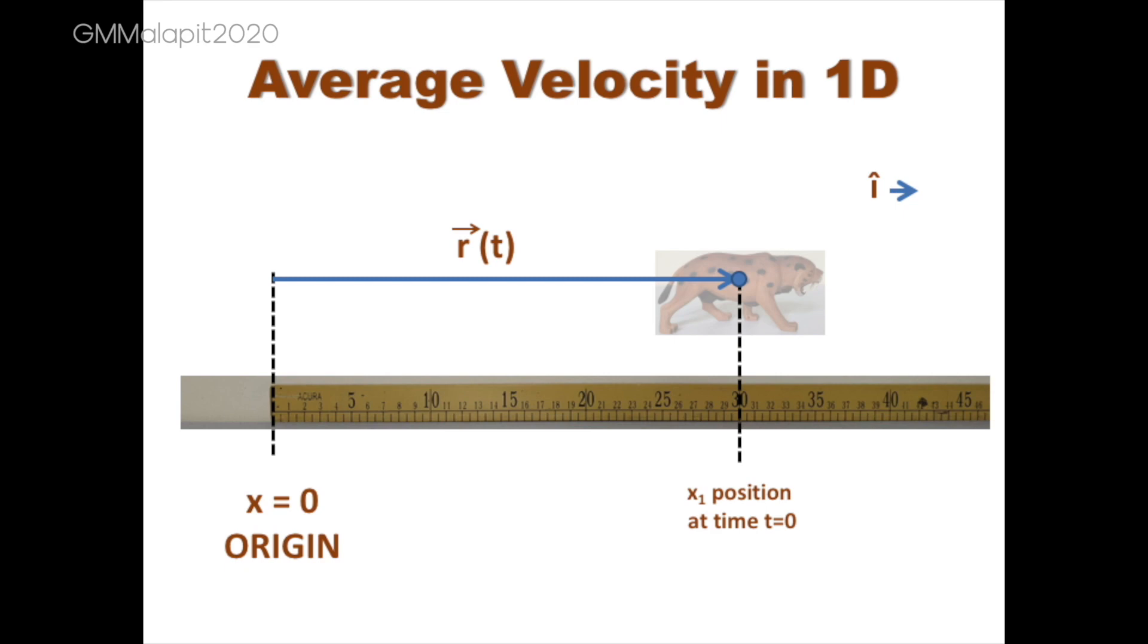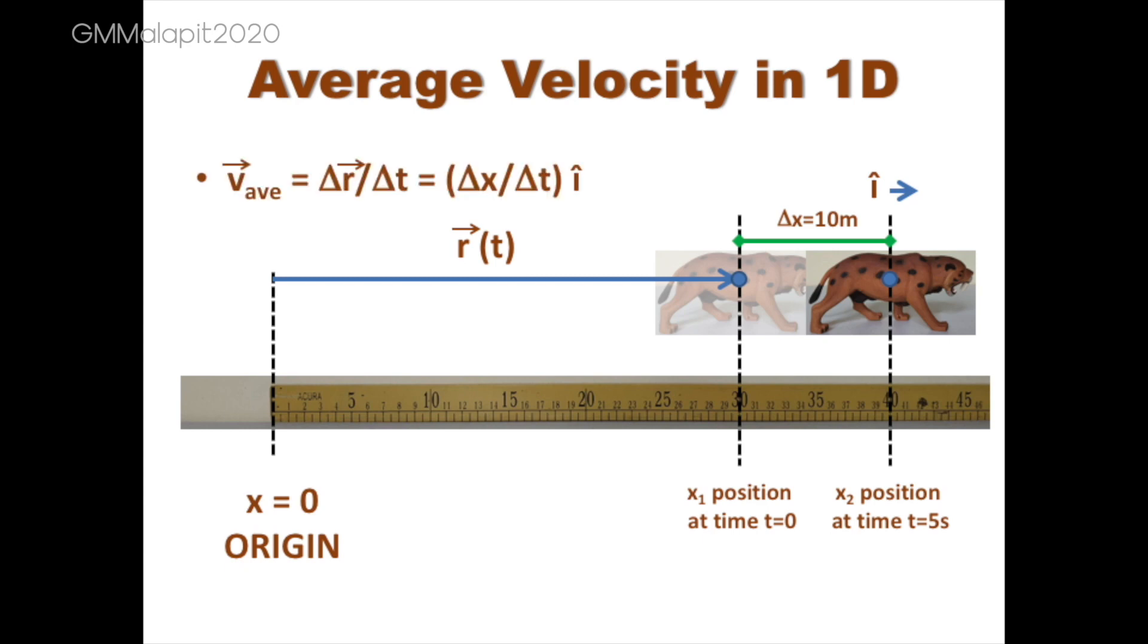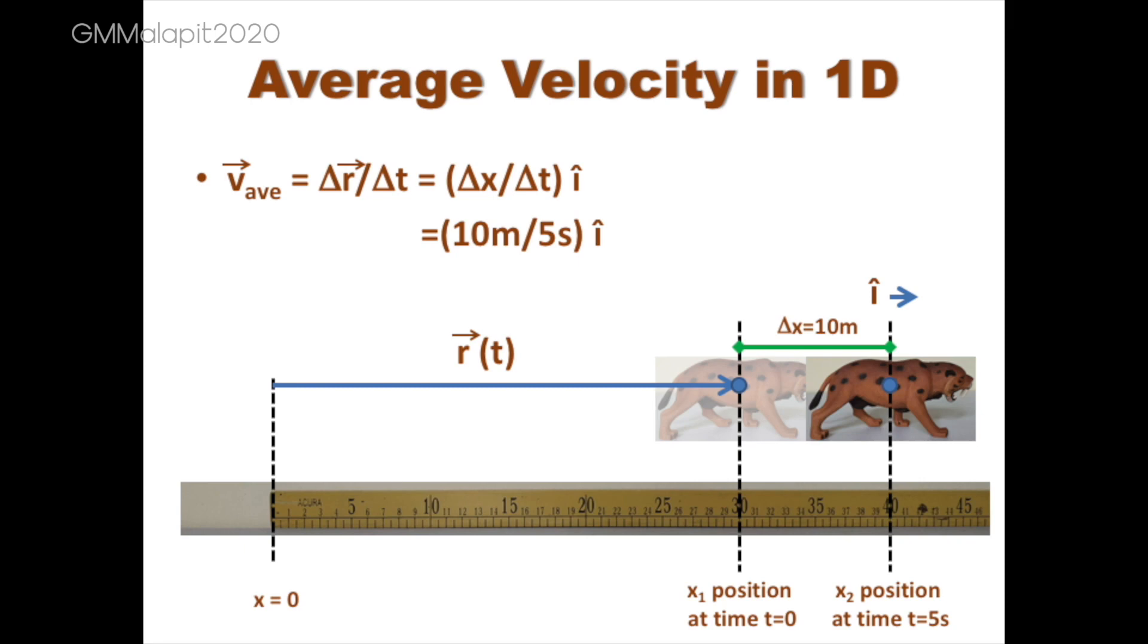Recall our smilodon initially at position x sub 1, and after 5 seconds it is now at position x sub 2. The change in position delta x is seen here as the green line, which is 10 meters. Computing for the average velocity given by our previous equation will yield 10 meters over 5 seconds in the positive x direction or positive i hat. Simplifying, we get 2 meters per second i hat.